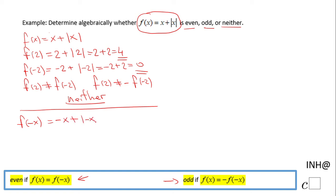The absolute value of -x is the same as the absolute value of x. The negative sign disappears. So we notice that f(x) is not equal to f(-x).